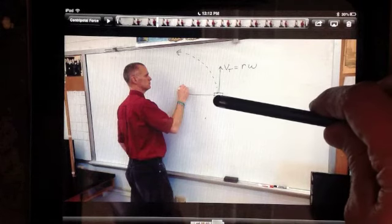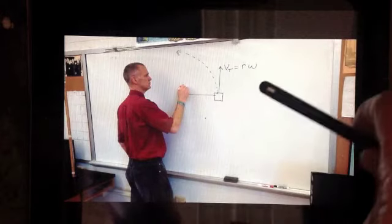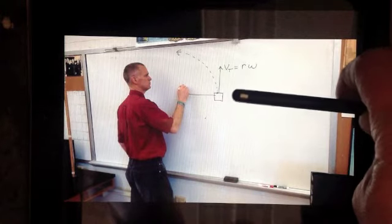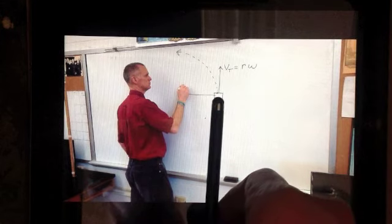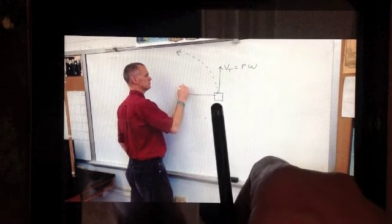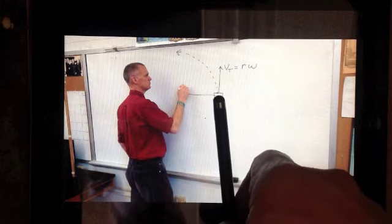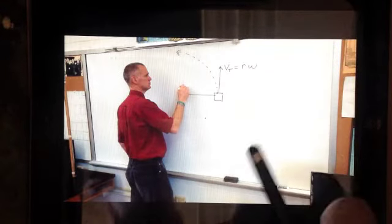So if the string broke, the string's pulling it in. The string is making it change directions, because we know from Newton's first law, the law of inertia, that this mass wants to keep going straight. So the string is pulling it in. The string pulls it in, so instead of going straight, it goes at an angle, and it makes a circle.